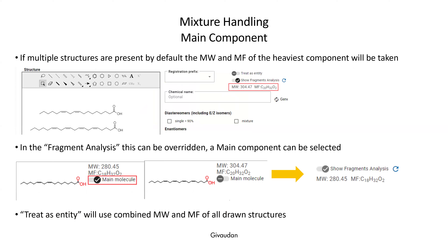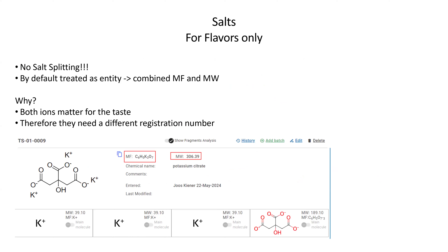What we saw in the screen capture was the fragment analysis. By default, the system takes the molecular weight and formula of the heaviest component when multiple structures are entered. The user can override this in the fragment analysis to select the main molecule, whose molecular weight and formula will then be used for display. There is also a 'treat as entity' option where the combined molecular weight and formula of all drawn structures is used. This brings us to salts — there is no salt splitting in the system. By default, salts are treated as entity with the combined molecular weight, because both ions matter for taste and they may go different routes in the evaluation process, requiring different registration numbers.